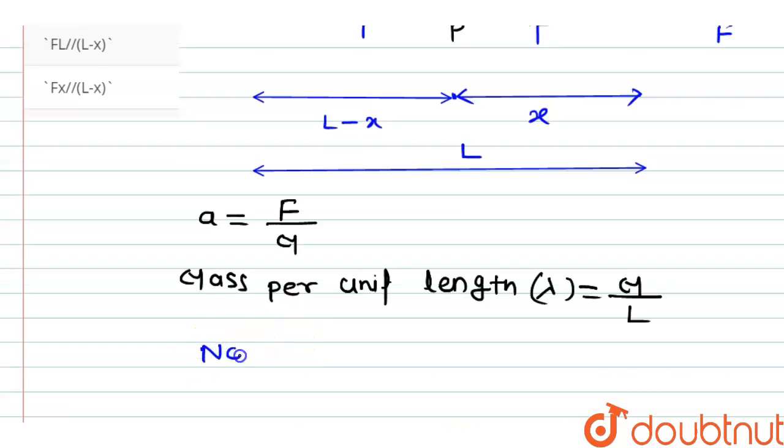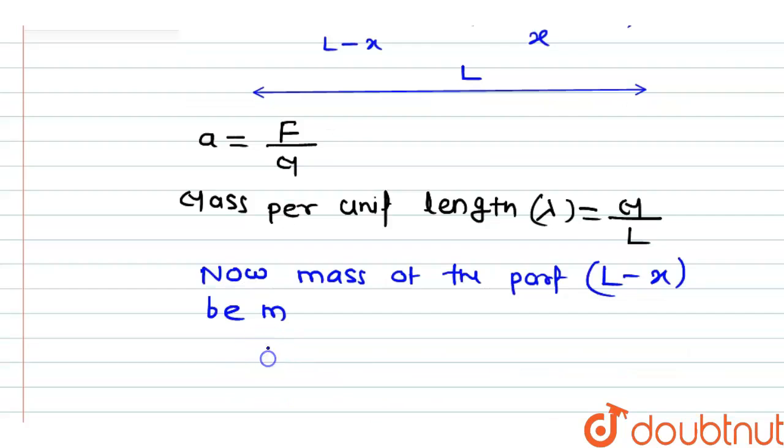Now mass of the part L minus x, we'll call it small m. Then capital M by L will be equal to small m divided by L minus x.